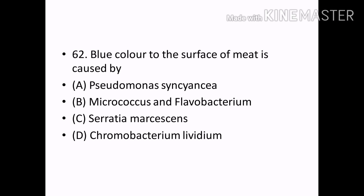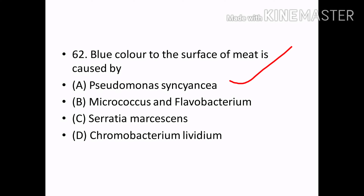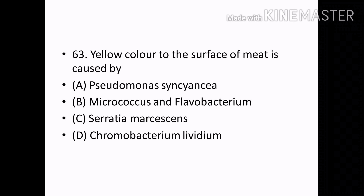Blue color to the surface of meat is caused by: Options — Pseudomonas Insinia, Micrococcus and Flavobacterium, Serratia marcescens, Chromobacterium lividum. Correct answer: Option A — Pseudomonas Insinia.